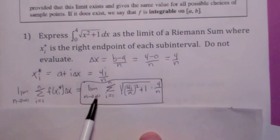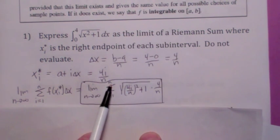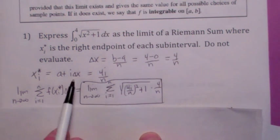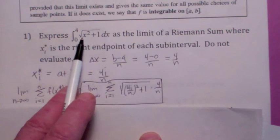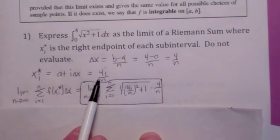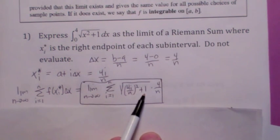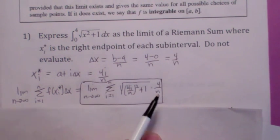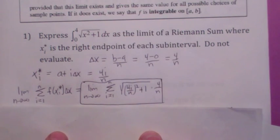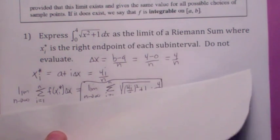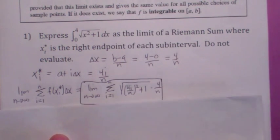That becomes the limit as n goes to infinity of the sum i equals 1 to n of the square root of 4i over n squared plus 1, times delta x which is 4 over n. We could probably simplify it, but let's not worry about that right now.